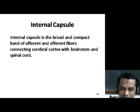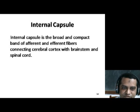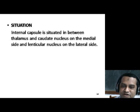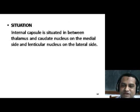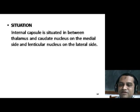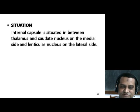This internal capsule has got mainly two limbs: one is the anterior limb and the other is the posterior limb, and in between these two limbs there is a genu. Here you can see there is an anterior limb and a posterior limb, with the genu situated in between the anterior and posterior limb.